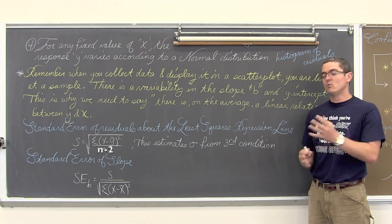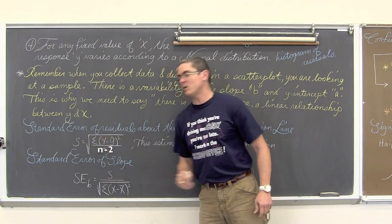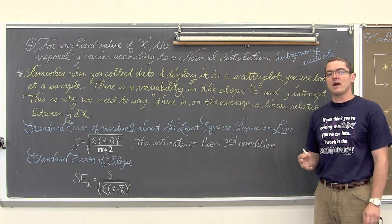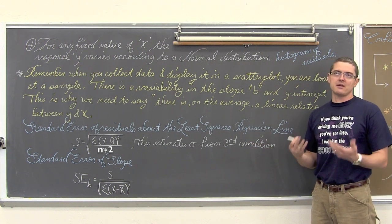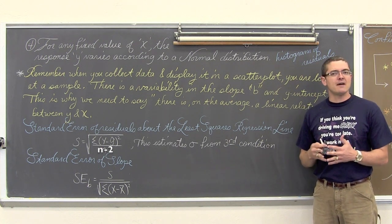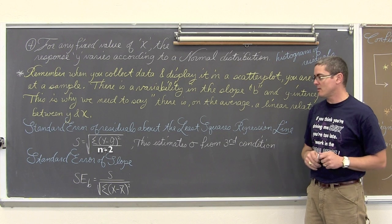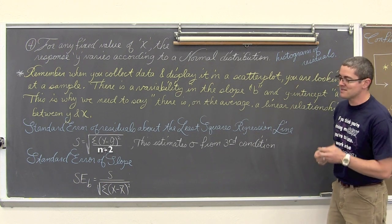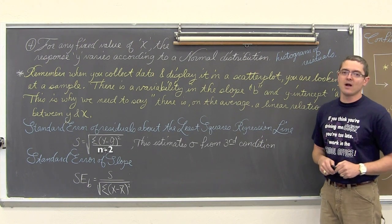The standard error of the slope will be given in the Minitab output, which provides the standard error of the slope of the regression line. It equals s (the standard deviation of the residuals) over the square root of the summation of (x minus the mean of x) squared. The standard error of the slope is all we are going to discuss in this video. The standard deviation of the y-intercept we are not going to discuss, because the y-intercept often does not have a real life application.